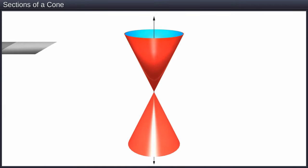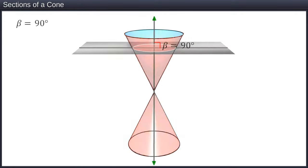If the plane intersects one nappe of the cone at right angle to the vertical axis, the resulting conic section is a circle.